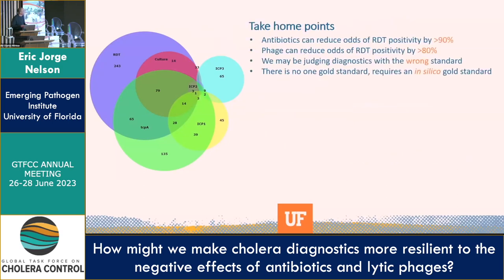The take-home points are: antibiotics can reduce the odds of RDT positivity by over 90%; lytic phage can do that by over 80%; and judging an RDT or other diagnostics against one gold standard might not be the best mindset. There's an alternative approach — an in silico method using latent class modeling — to create an in silico gold standard that you can pin your real diagnostics against. That's an approach we took in the JCM paper and will continue to take forward, and my colleague Jason Andrews at Stanford heads up that line of modeling.